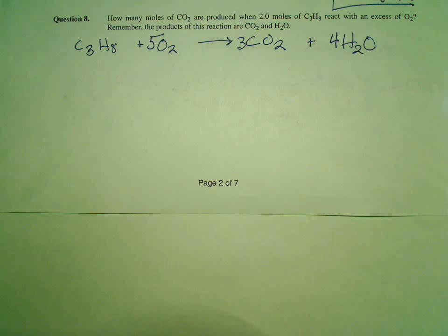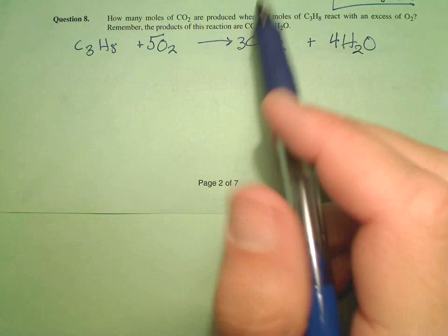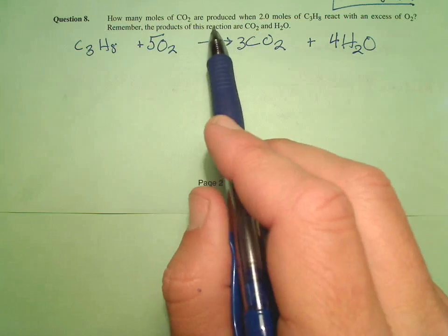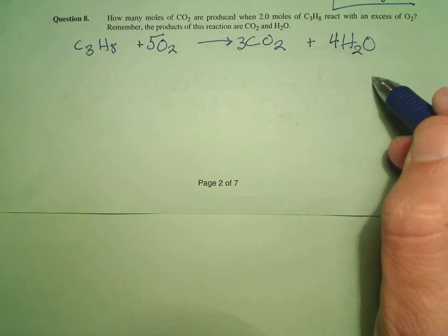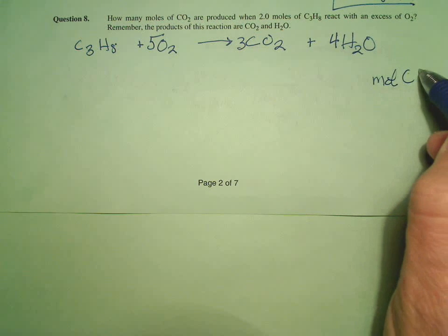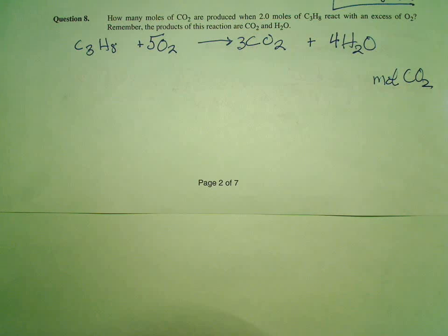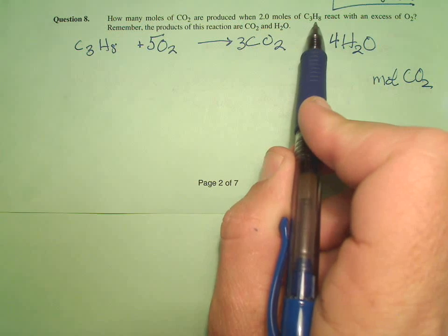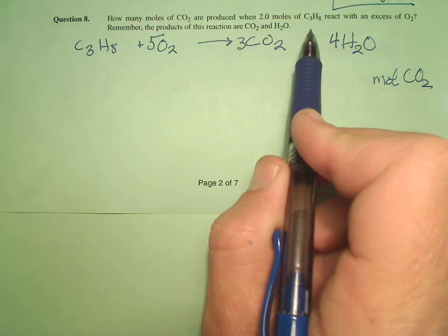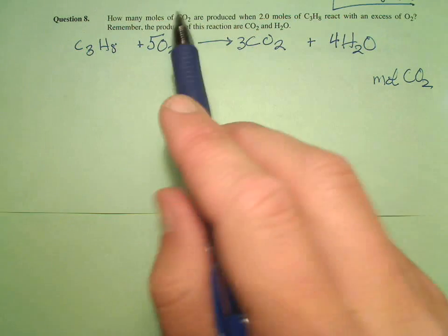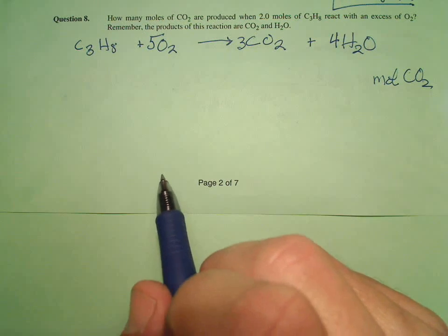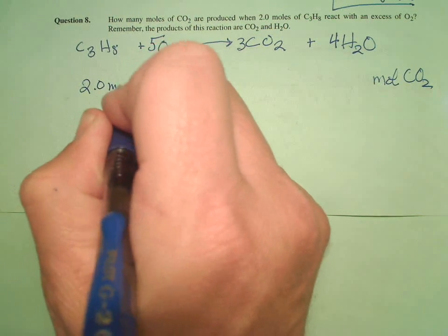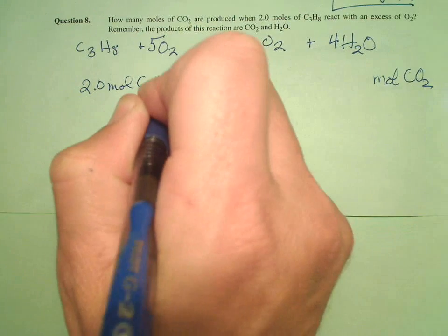Now we look at this problem, and this is actually a little easier than the previous problem. This says how many moles of CO2 are produced, so I know it's moles of CO2. When 2.0 moles of C3H8, which happens to be propane, react in excess of O2, that means I don't have to worry about how much O2. So I only have one place to start, which is 2 moles of C3H8.